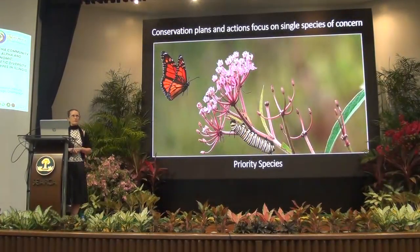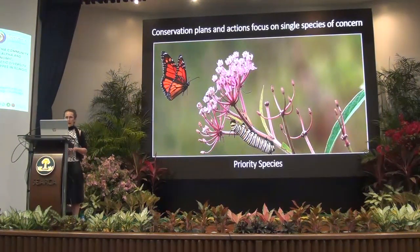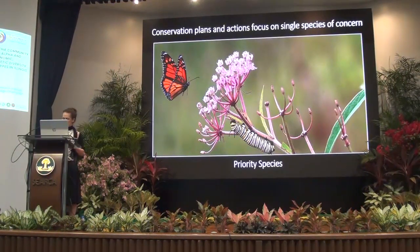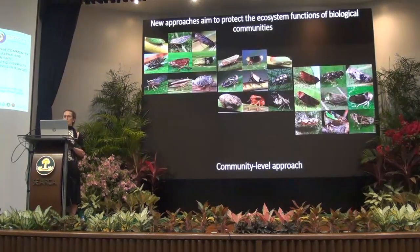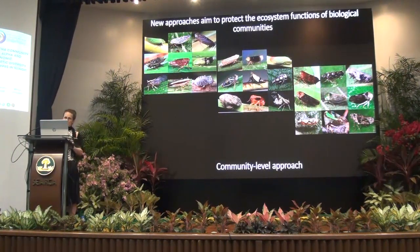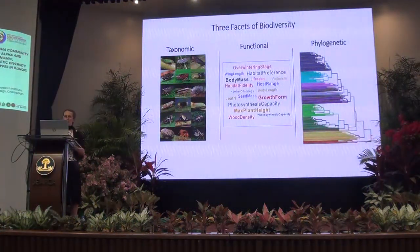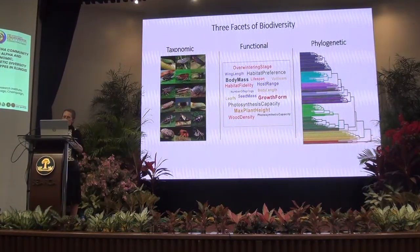All the data they have been accumulating are mainly used for conservation plans and actions that focus on single species of concern — such as the beautiful Monarch butterfly, which is a priority species in Illinois. But there is another approach that aims to protect ecosystem functioning and services. To do that, we need to focus at the community level, looking at three facets of biodiversity: taxonomic, functional, and phylogenetic.